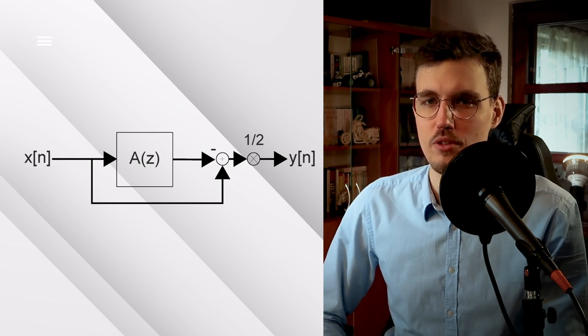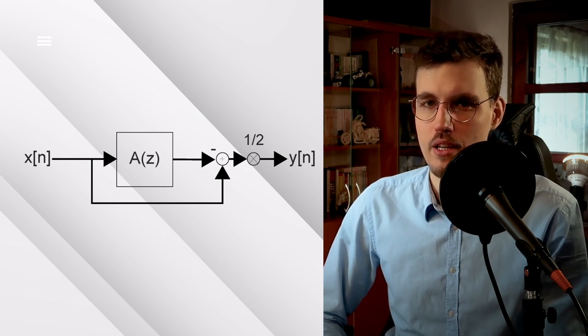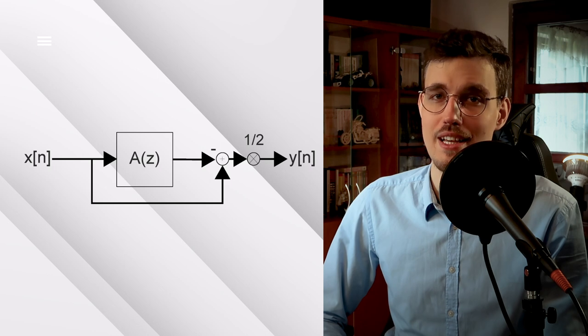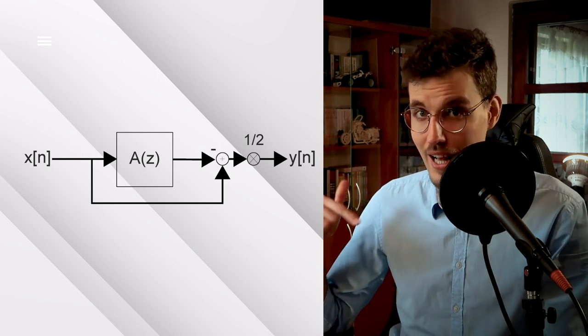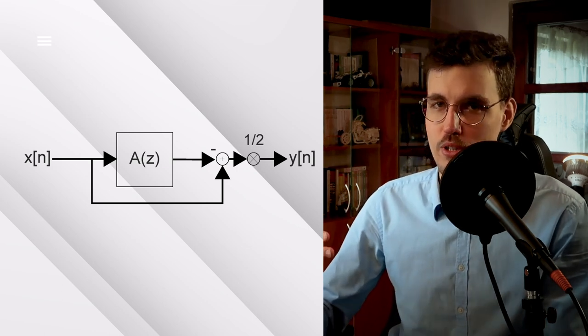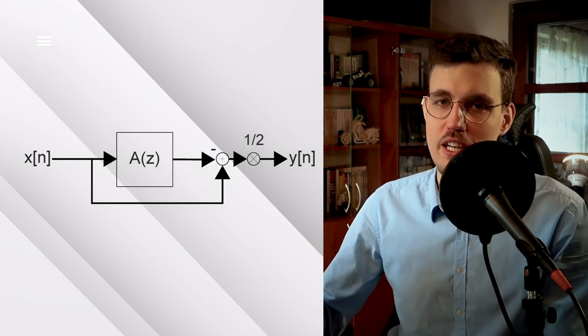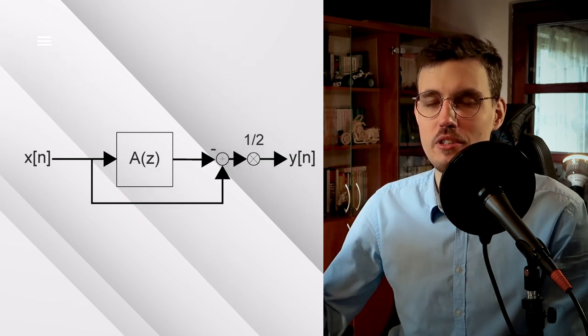By multiplying the output of the all-pass by minus 1, we invert all the components in phase. Therefore, the frequency component at the Nyquist frequency, which was inverted in phase by the all-pass filter, gets inverted again and is back in phase with the corresponding component of the input signal. So the Nyquist frequency component before the multiplication by half is doubled in amplitude. Conversely, the DC component, which was previously in phase, is now negated. Therefore, the DC component is missing at the output signal of the structure.